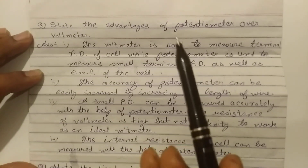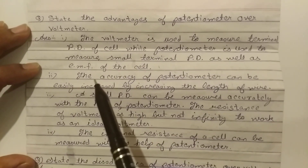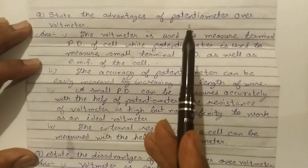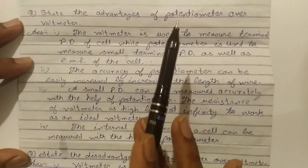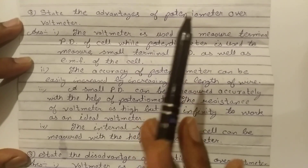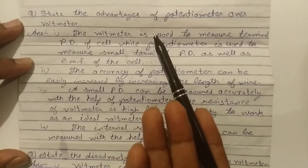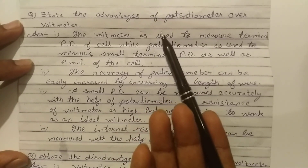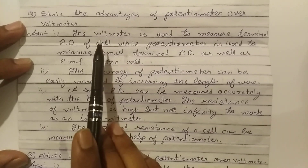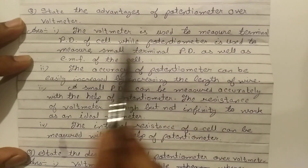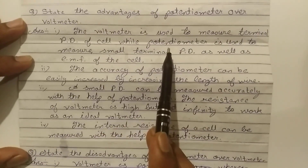Potentiometer is used to measure potential difference, and voltmeter is also used to measure potential difference. So what is the difference? What is the advantage of potentiometer? The voltmeter is used to measure the terminal potential difference of a cell.